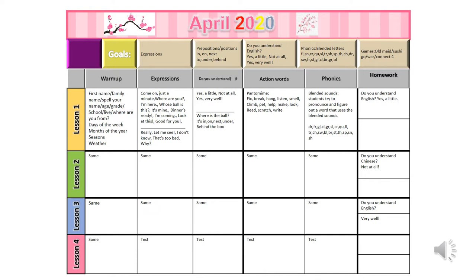In the next column I have phonics — blended sounds. Students try to pronounce and figure out a word that uses the blended sounds. Under homework, I hand out a sheet that has the question 'Do you understand English?' with the answers: yes, a little, not at all, or very well. They have to memorize each of these answers. For lessons two and three you're going to repeat the material. For lesson four, at the end of the month, I test my students.